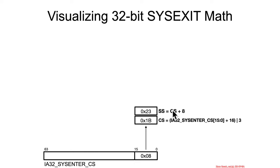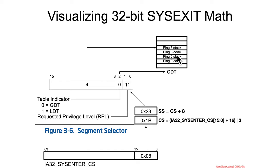SS is again CS plus 8. So basically, according to the way things must be set up for sysenter and sysexit to work, you must have effectively: ring 0 code, followed by ring 0 stack, followed by ring 3 code, followed by ring 3 stack — in that order in the GDT.